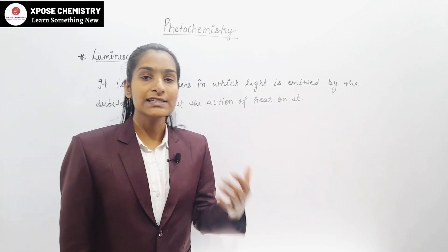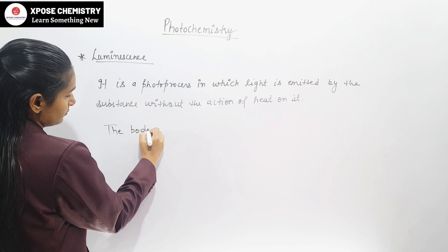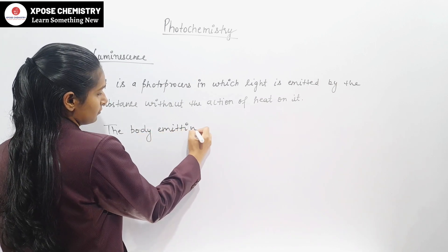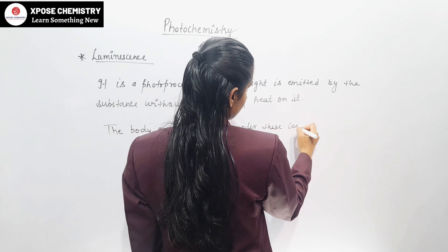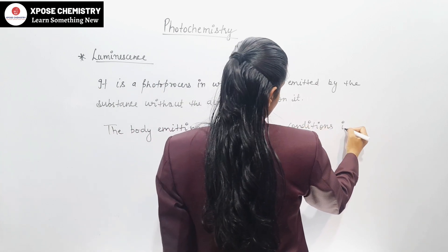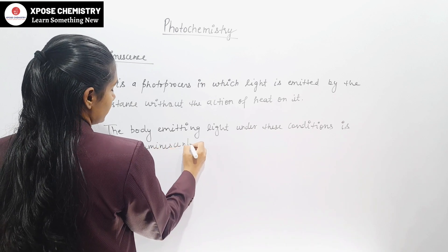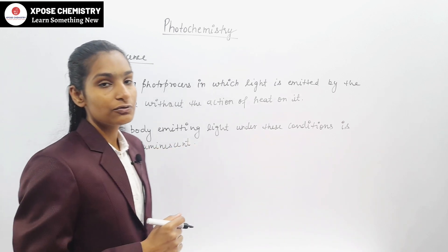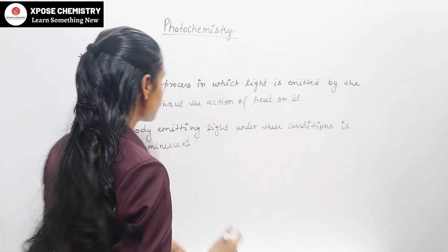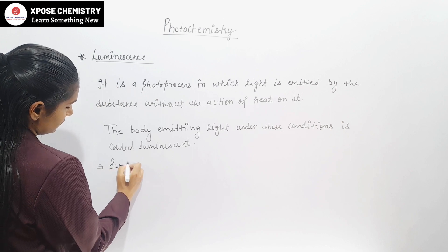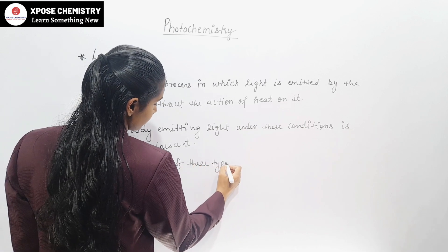The body emitting light under these conditions is called luminescent. Luminescence is of three types.